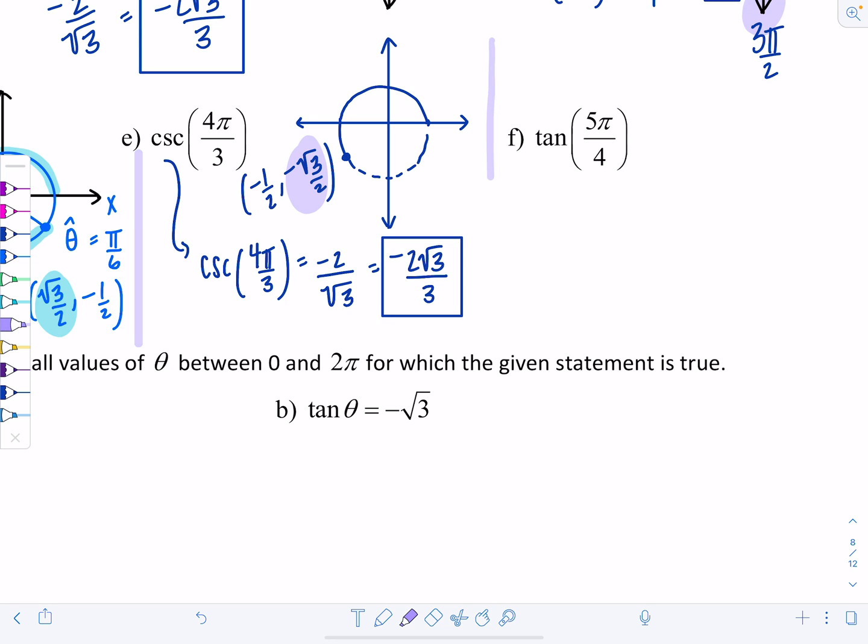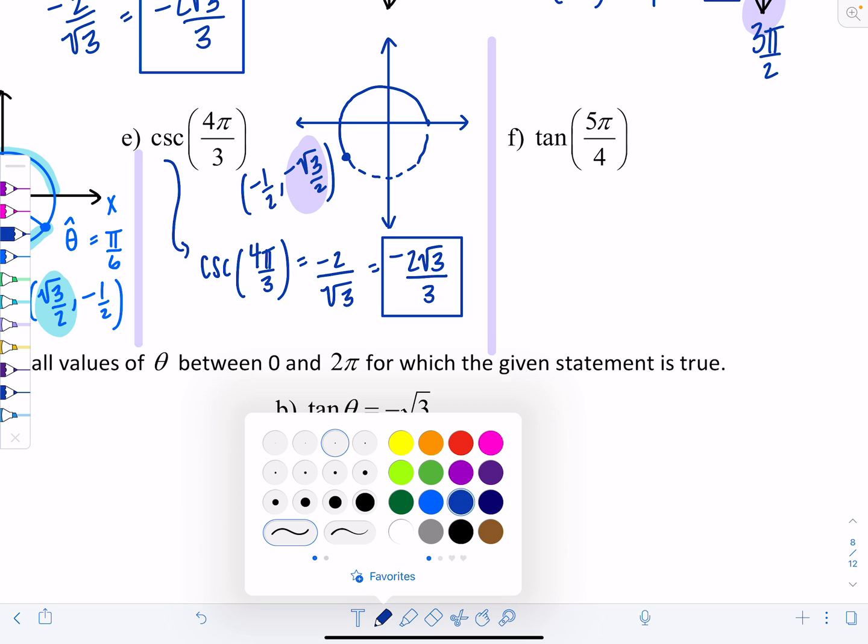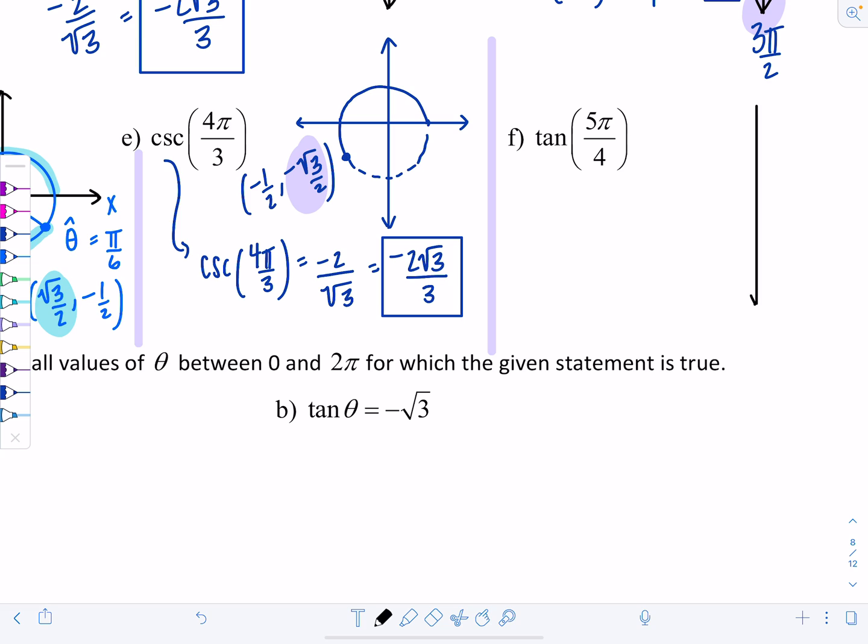Last one, tangent 5 pi over 4. 5 pi over 4 is in quadrant 3. This is 4 pi over 4, then you go a little bit more. There's 5 pi over 4. The reference angle's pi over 4, the 45 degree one. Both coordinates are the same: negative rad 2 over 2, negative rad 2 over 2. Tangent's just going to be 1. Tangent of 5 pi over 4 equals sine divided by cosine, or y divided by x, which is positive 1. Negative divided by negative cancels.